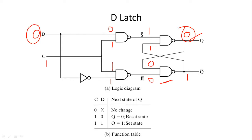So if the input is set, output is set; if input is reset, output is reset — 1 for 1 and 0 for 0. If we change the clock to 0, it produces no change to our latch. The D latch only works when clock pulse is high (1). When clock is 0, there is no change — the latch holds its previous state, which could be 0 or 1.